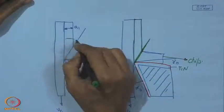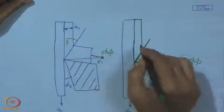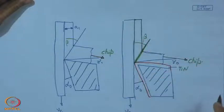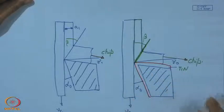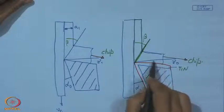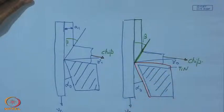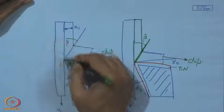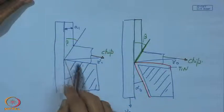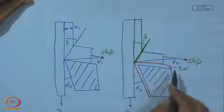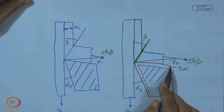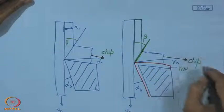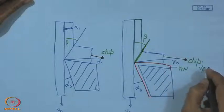One can ask: what is the role of this coating? The chip moves at high speed. It was approaching the tool at velocity V_c, then the motion was diverted by angle (π/2 − γ_o). With this diversion it is now moving with velocity V_f — the velocity of the chip. On the tool we have two surfaces: the face, over which the chip is sliding, and the flank, which faces the machined surface.